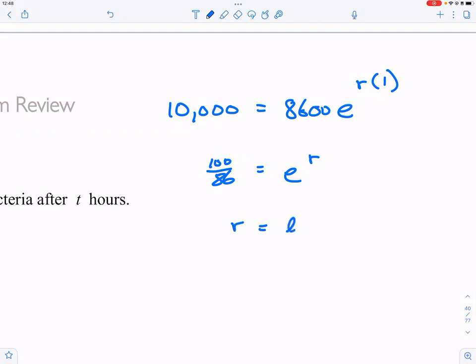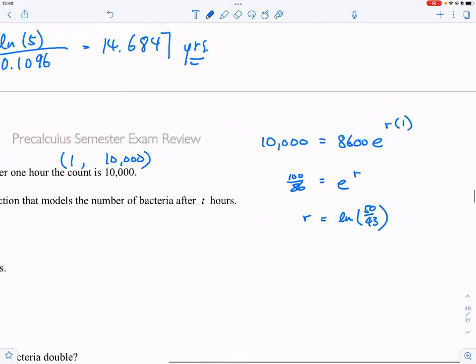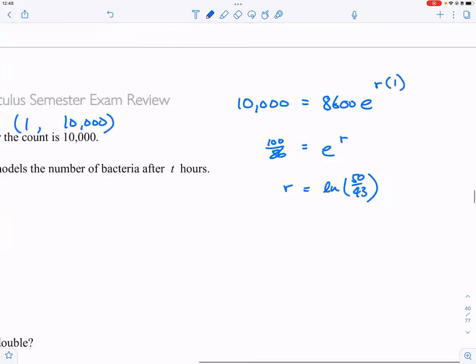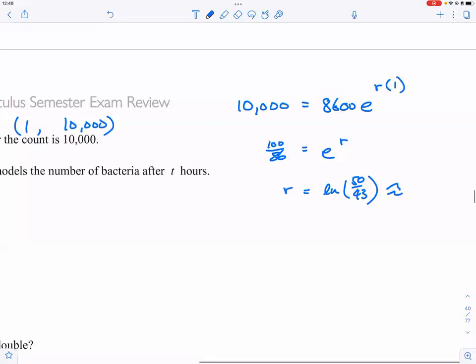So r is simply equal to natural log of 50 over 43. I simplified the fraction to 50 over 43, and that is approximately natural log of 50 over 43, which is 0.1508.